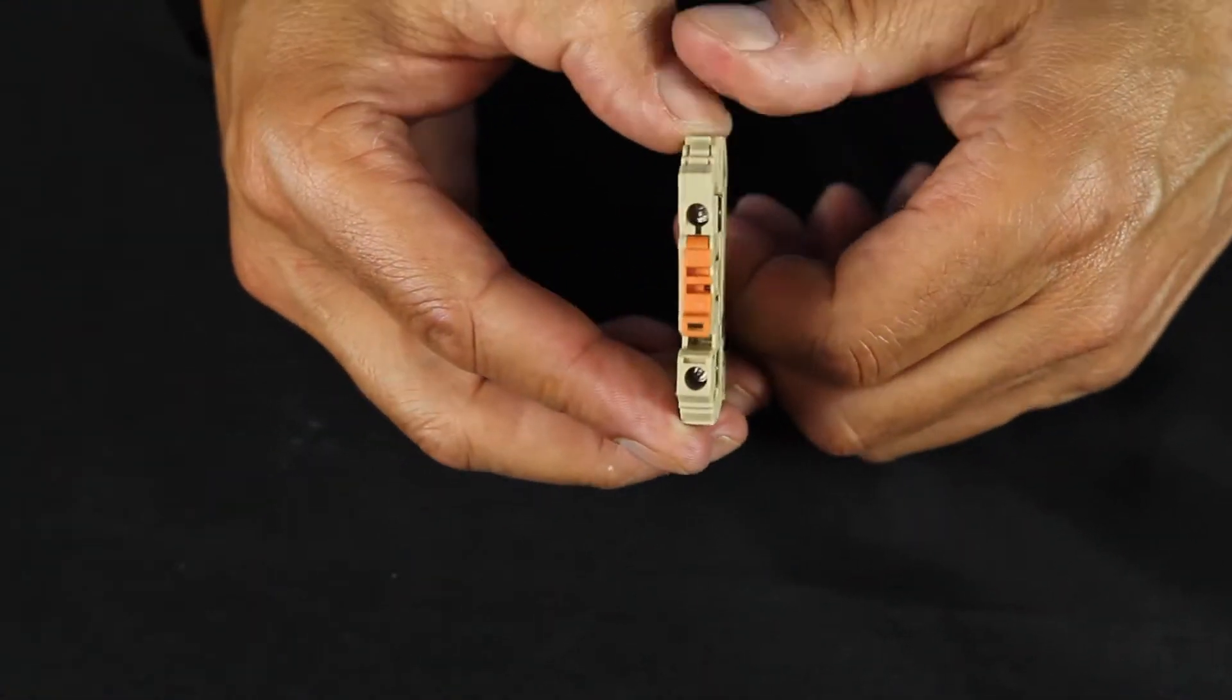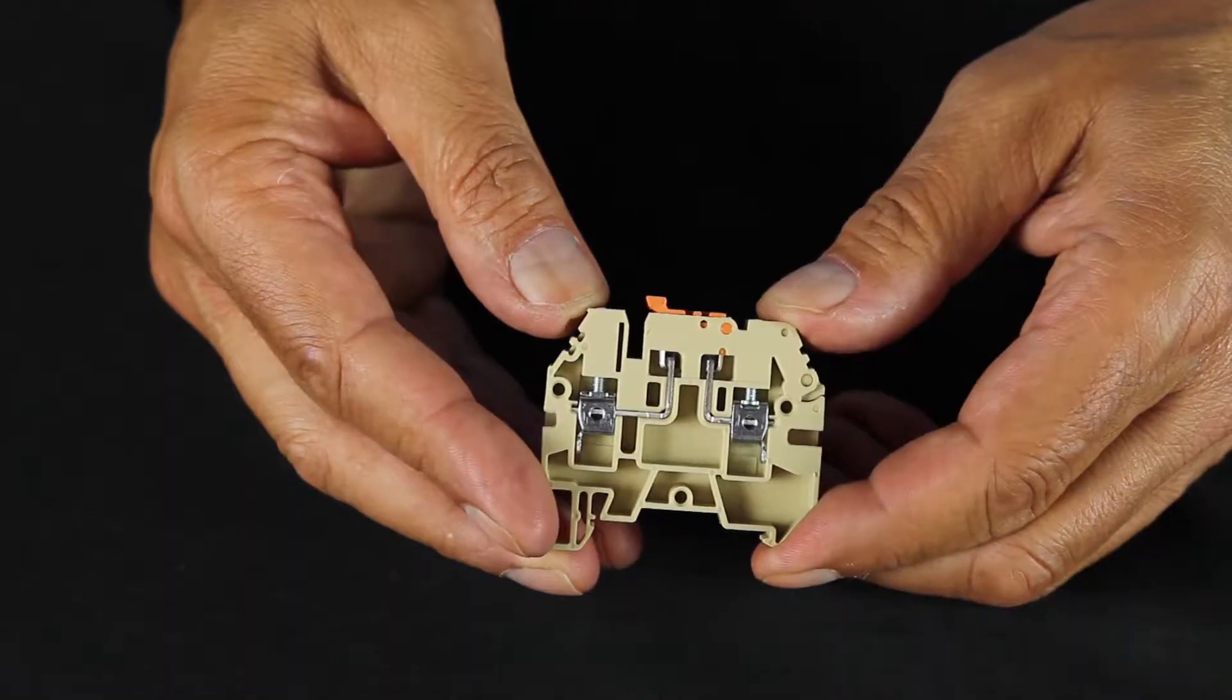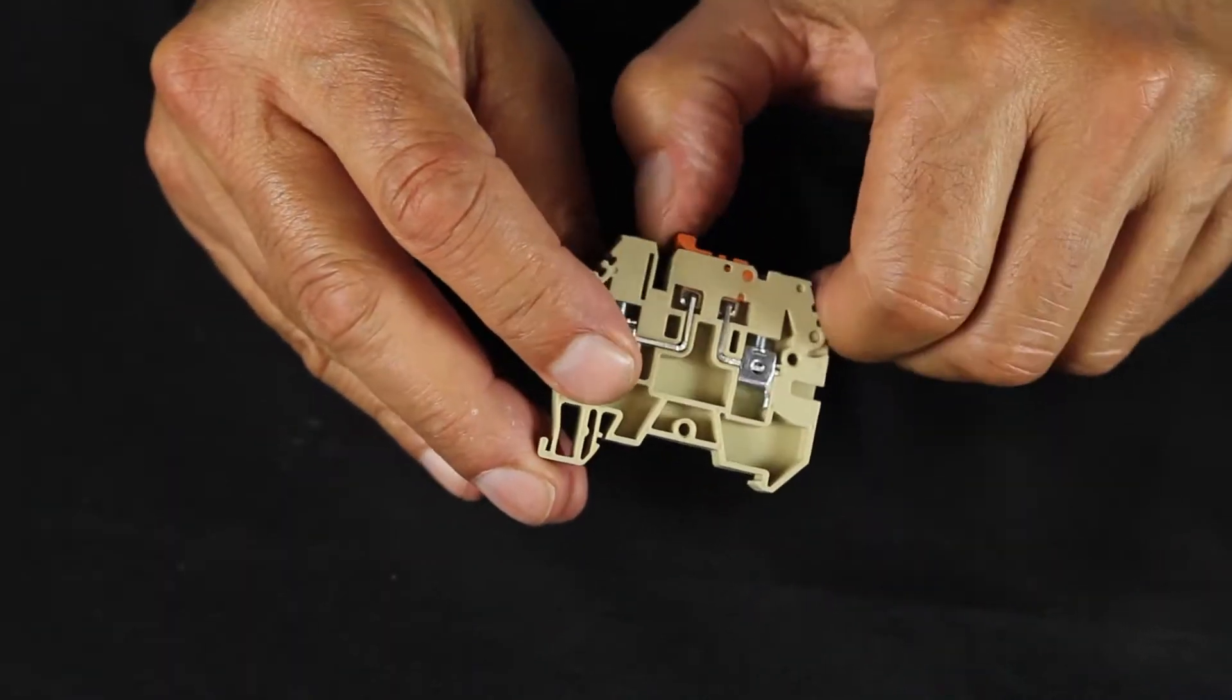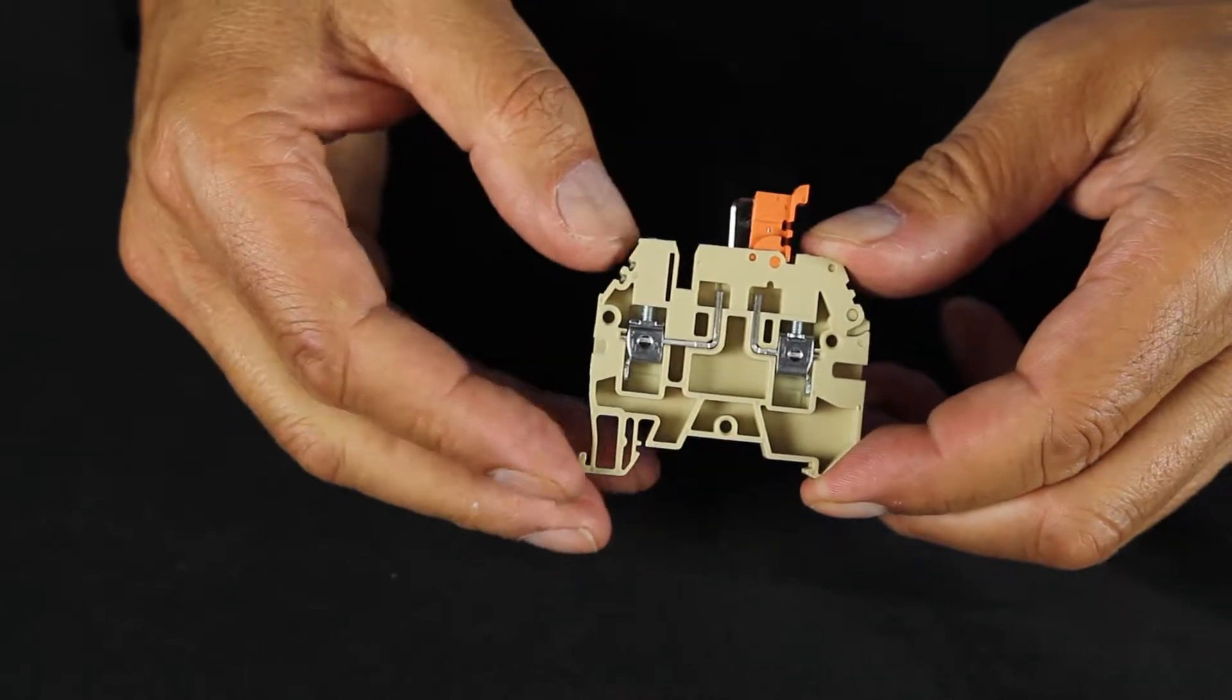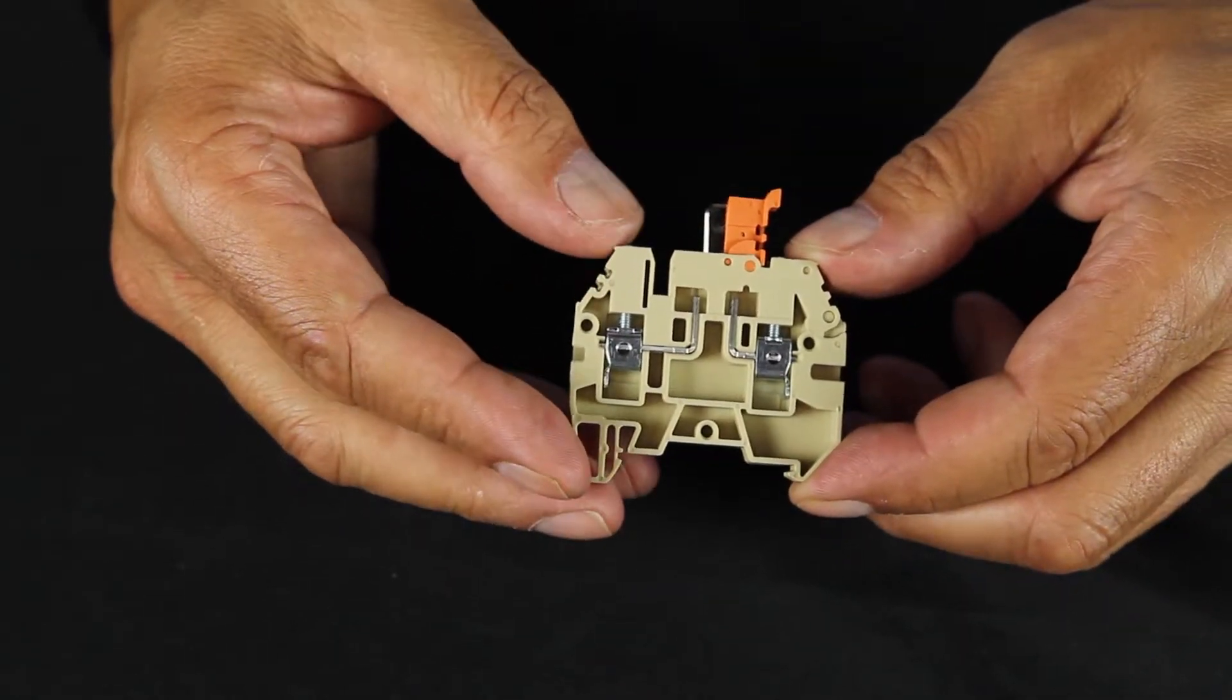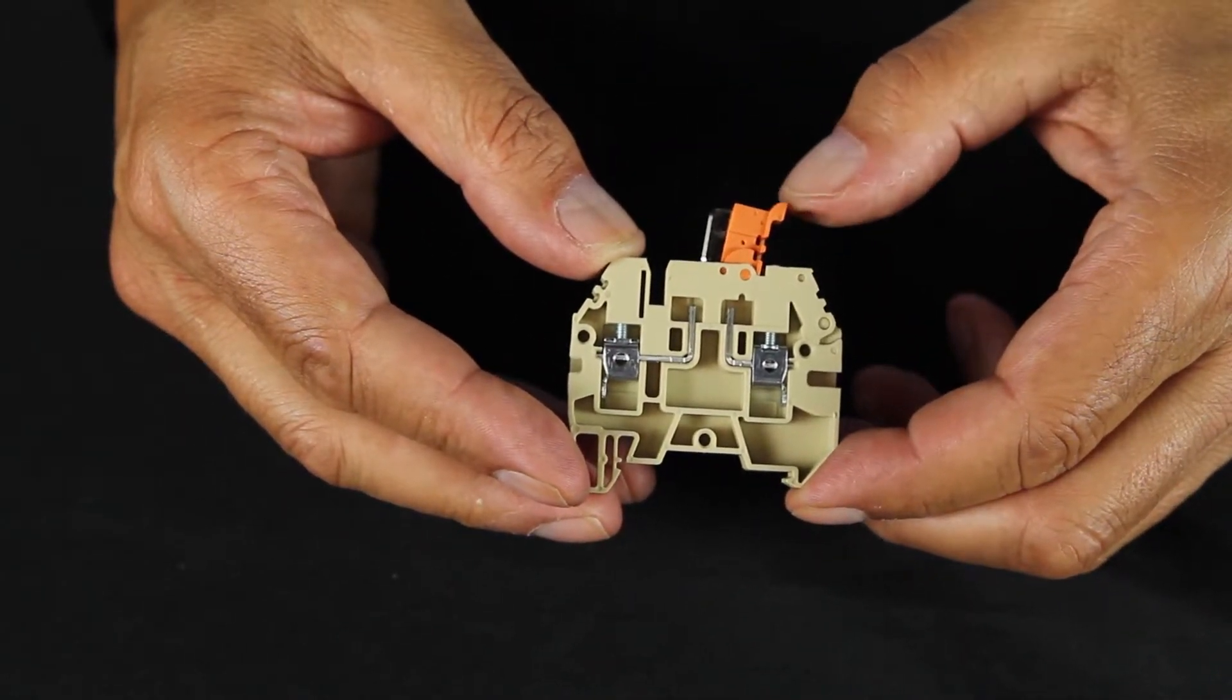These blocks allow technicians to cut power to a circuit to perform maintenance or troubleshooting. By toggling the top mechanism, a metal knife blade is engaged and disengaged to connect or disconnect the circuit.